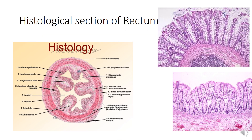This is the histological section of the rectum. The rectum resembles the colon with all four layers: mucosa, submucosa, muscularis externa, and serosa or adventitia. It differs from the colon in the following features: the rectal mucosa contains fewer but longer glands — longer crypts of Lieberkühn. The outer longitudinal layer of muscularis externa is of uniform thickness and does not show taenia coli. Most of the rectum is covered by connective tissue adventitia; only the anterior and lateral surface of the upper third of the rectum has a serosa covering.